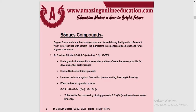Hello everyone, welcome to Amazing Online Education. Here we will continue building material Chapter 1 with Bogue compounds topic. Bogue compounds are the complex compounds formed during the hydration of cement. Hydration is the chemical reaction that occurs when water is mixed with cement — the ingredients in cement react with each other and form the Bogue compounds.